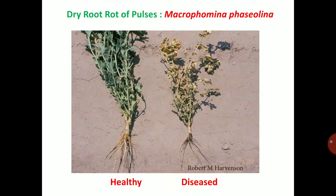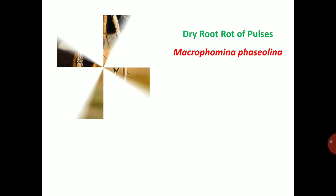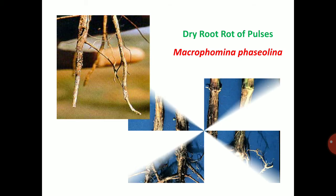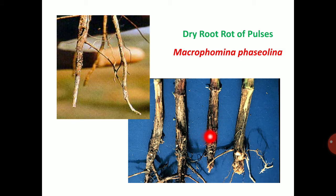The first and foremost symptom is complete wilting — sudden and complete wilting of the infected plant. Within two to three days the entire plant wilts. That is the sudden wilting symptom. Next is bark shredding: at the time of the sclerotial stage, bark shredding occurs and the root shreds all the way to the tip.